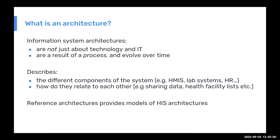Talking about how things relate to each other in the system is a bit abstract, but specifically in health information systems it could be: how does the HMIS used for routine reporting of facility data link to your human resource system or your lab information system? What is the relationship between them — are they sharing data, sharing facility codes in the master facility list? That's how we at HISP typically think about health information system architectures.